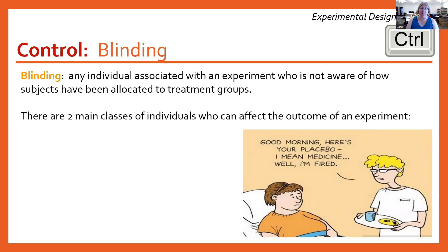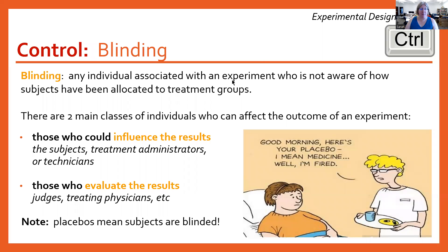There are two main groups of individuals who could affect the outcome of an experiment. The first one is the subjects, and the second is the treatment administrators or the technicians. If you as a participant know whether you're getting the placebo or the treatment, it could be that the treatment administrators give that away as they're handing out the medication.